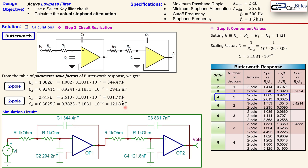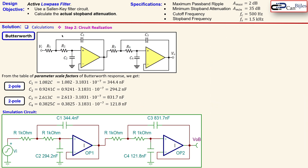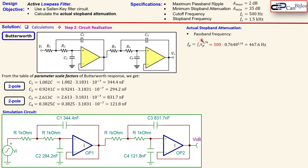Now let's calculate the actual stopband attenuation at 1.5 kHz. First we need the passband frequency, given by the formula: f_p = 500 Hz × epsilon_p^(1/n) = 500 × (0.7648)^(1/4), which results in approximately 468 Hz. This is the frequency where the gain is exactly −2 dB, dropping from the 0 dB unity-gain level, and this will be verified in the simulation results shortly.